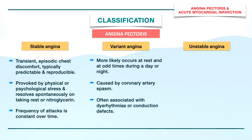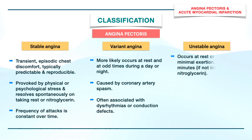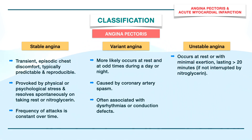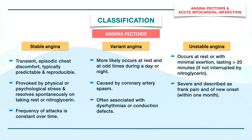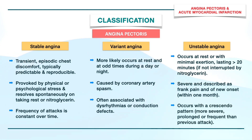Unstable angina, also called pre-infarction or crescendo angina, presents with at least one of three symptoms. It can occur at rest or with minimal exertion and lasts more than 20 minutes if not interrupted by nitroglycerin. The pain is severe, often described as frank pain and of new onset within a month. There is a crescendo pattern — more severe, prolonged, or frequent pain than the previous attack.